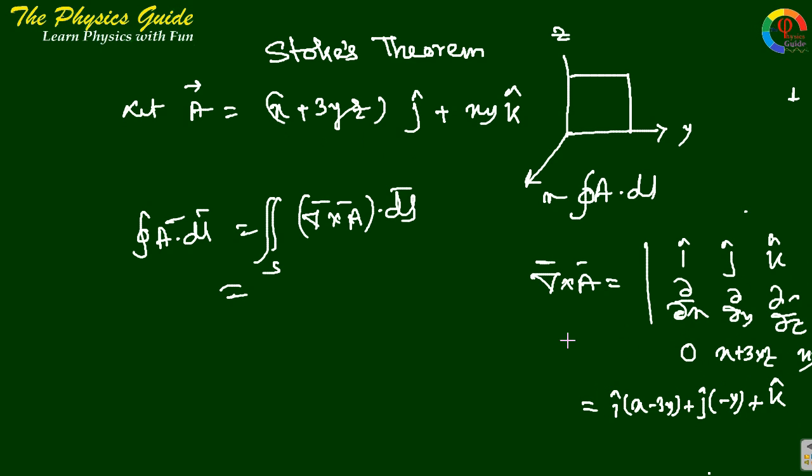So just put this value in the surface integral: i cap ax minus 3y plus j minus y plus k cap dot ds. So dot ds is a vector so there will be unit vector. This surface lying yz plane, so unit vector should be i, means perpendicular to this surface. And ds should be dy dz.